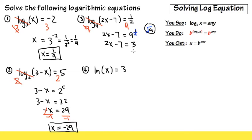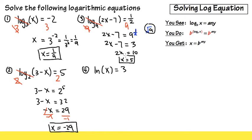And then we can continue. This is just an equation we can solve: 2x minus 7 is equal to 3. Let's add 7 on both sides, so we have 2x is equal to 10, and then divided by 2 on both sides, we get x is equal to 5. And we are done again.